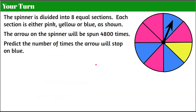Now it's your turn. We have the same spinner divided into eight equal sections, each section either pink, yellow, or blue as shown. The arrow of the spinner will be spun 4,800 times. Predict the number of times the arrow will stop on blue. Pause the video here, find the relative frequency, and come back and hit play when you're ready.